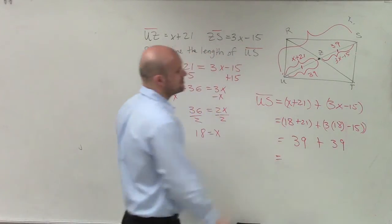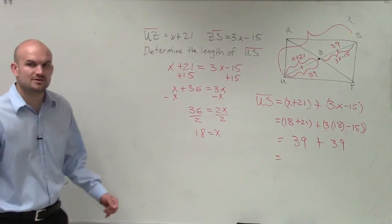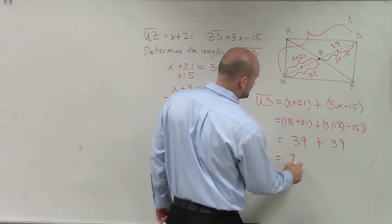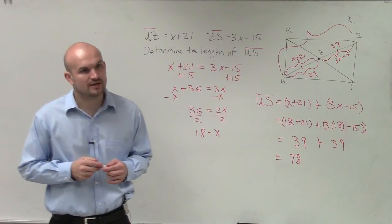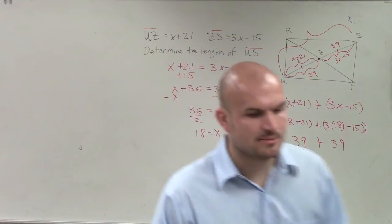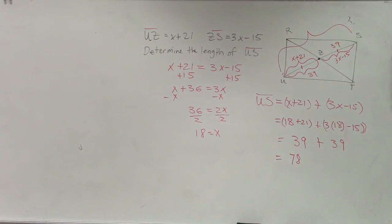So now I add up the two lengths. 39 plus 39 is going to be 78. And there you go. That's how you figure that out. So it's all about using the properties of your parallelograms.